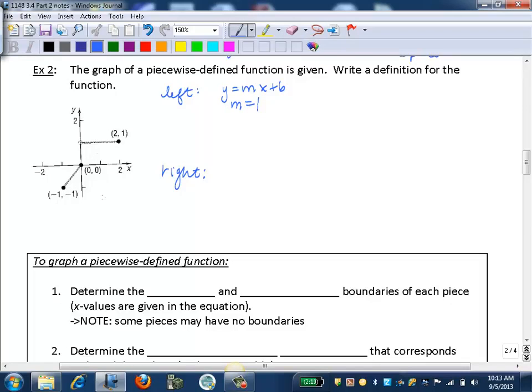So we know our slope is one. And we can see clearly that our y-intercept is zero, so we know our b is zero. So then the equation of this line, of this piece, is going to be y equals x. So this is linear.